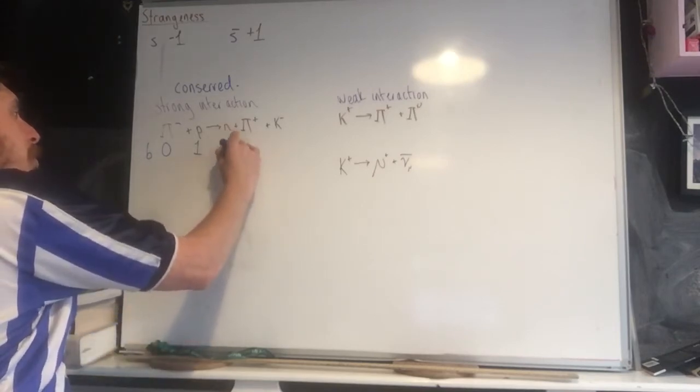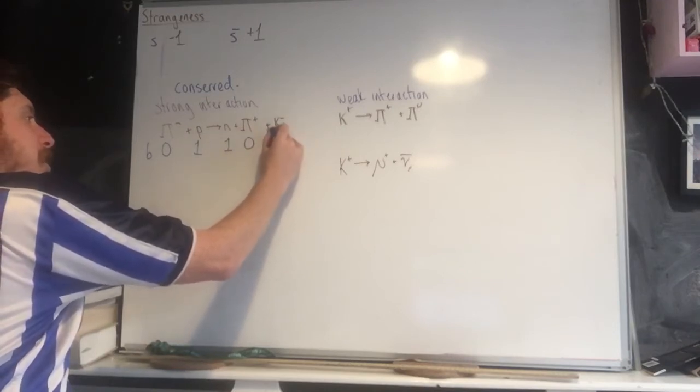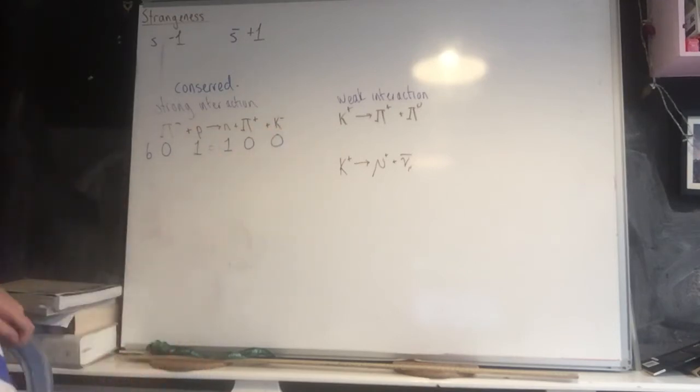This is a neutron with a baryon number of one. This is a meson with a baryon number of zero. A kaon is a meson, so that's zero as well. One equals one, so that checks out.